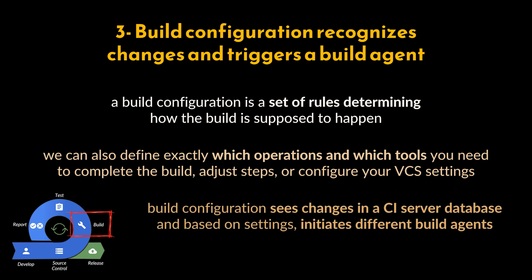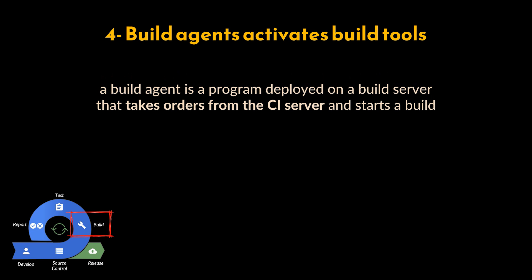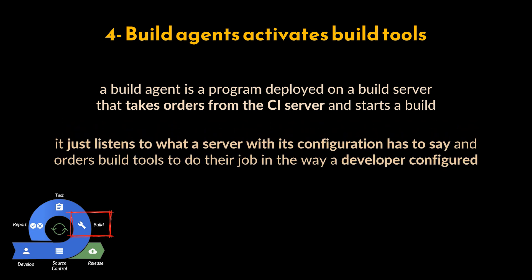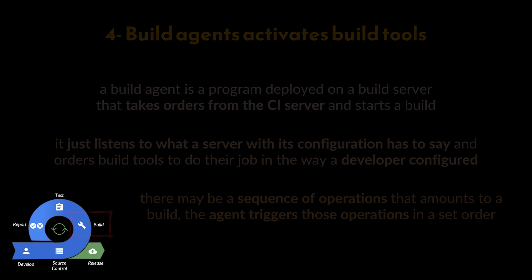Step four: build agent activates build tools. A build agent is a program deployed on a build server, normally outside of the CI server, that takes orders from the CI server and starts a build. A single commit can trigger several parallel agents on different target machines — for example, for different operating systems. The agent doesn't compile code, compress files, or generate installers; it just listens to the server and orders build tools to do their job in the way a developer configured.